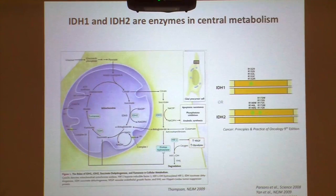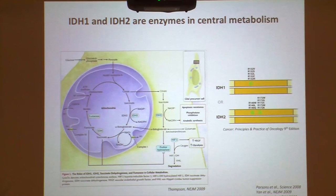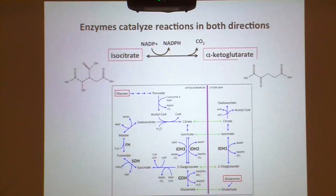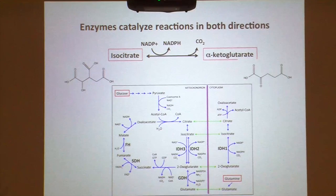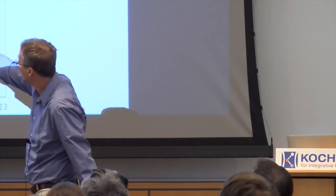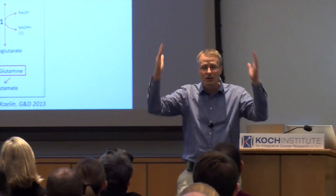The first clue that this wasn't quite right came from the genetics. If someone showed you mutations at a very limited number of residues — in fact the same residue in two different synonymous proteins — you wouldn't conclude loss-of-function; you would conclude gain-of-function. But the enzyme activity measurements seemed to show loss-of-function. The key realization is that enzymes don't catalyze reactions in only one direction — they must catalyze both directions by the laws of thermodynamics. IDH1 and IDH2 (but not IDH3) were known in the literature to be reversible under physiological situations.